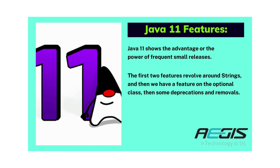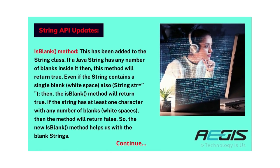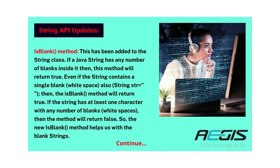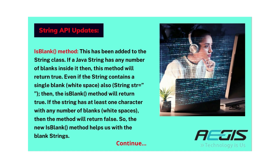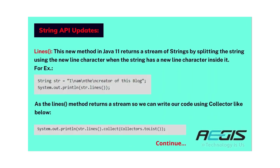Now let's understand Java 11 features. Java 11 shows the power of frequent small releases. The first two features revolve around strings, then we have a feature on the Optional class, and then some deprecations and removals. In Java 11, the first feature is String API updates. Below are some new String API updates. First is the isBlank() method added to the String class. If a Java string contains any number of blank spaces, this method returns true — even if the string contains a single whitespace. If the string has at least one non-whitespace character, then the method returns false. The new isBlank() method helps us handle blank strings. Second is the lines() method, which returns a stream of strings by splitting the string on newline characters.